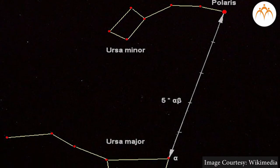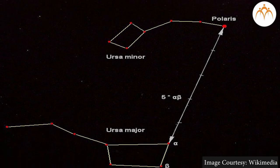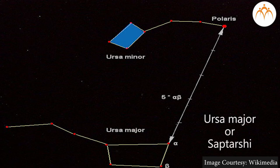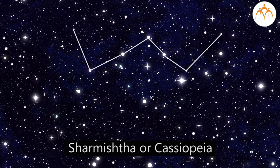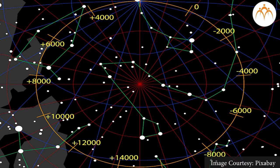Ursa Major, or Saptarshi, is a group of stars which show a structure like a kite with a tail. It is also called the Great Bear. The two marked stars are pointer stars as they mark the direction of the pole star. Sharmistha, or Cassiopeia, is a group of five stars which look like the letter M or W. The perpendicular bisector joining the third and fourth stars points to the pole star.